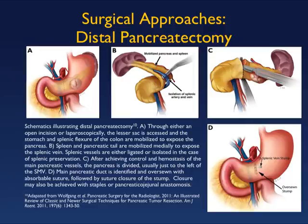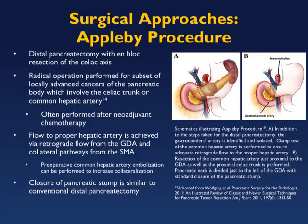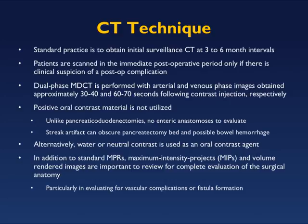We're also seeing distal pancreatectomies and splenectomies as part of the Appleby procedure — performed in patients with unresectable pancreatic cancer that responds to chemotherapy but where the celiac is encased, requiring resection of the celiac, distal pancreas, and spleen. It's an impressive surgery with good results: 90% of Hopkins Appleby patients have had negative tumor margins. For post-Appleby follow-up, we use dual-phase imaging, being careful not to over-call thickening near the celiac as tumor recurrence.